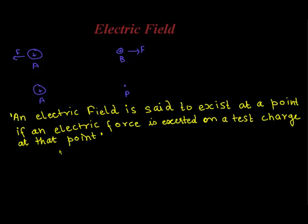So we can now say that an electric field is said to exist at a point if an electric force is exerted on a test charge at that point. Now electric field, like electric force, is also a vector quantity.